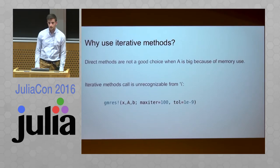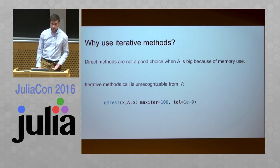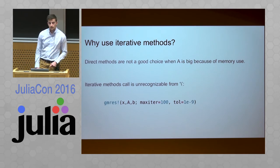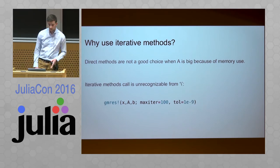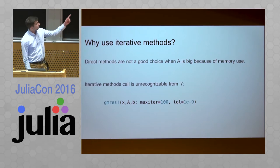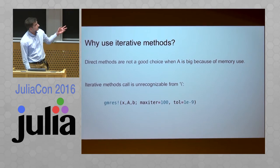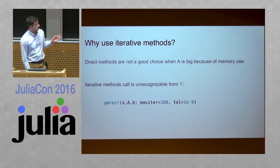So why use iterative methods? Well, the general rule is to use the backslash operator, but sometimes A is really large and this method can take a lot of memory. So in these cases we have to use iterative methods. And here we can see that the call is not so obvious as before — you usually have more than two parameters describing the problem.